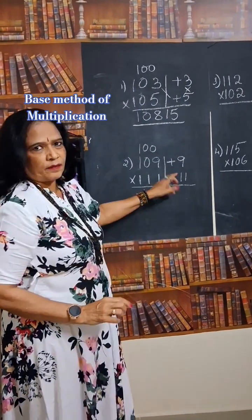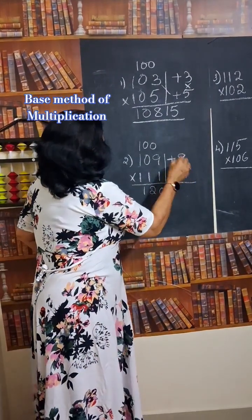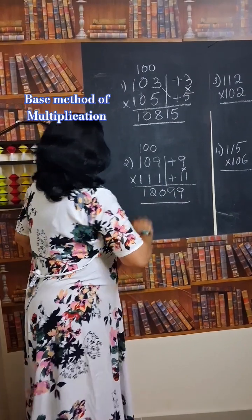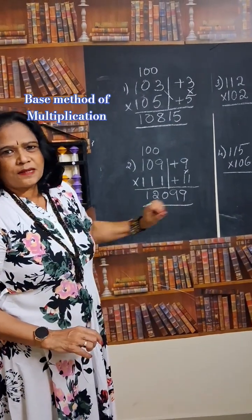9 into 11 multiplication. It will be 99. So the answer is 12,099.